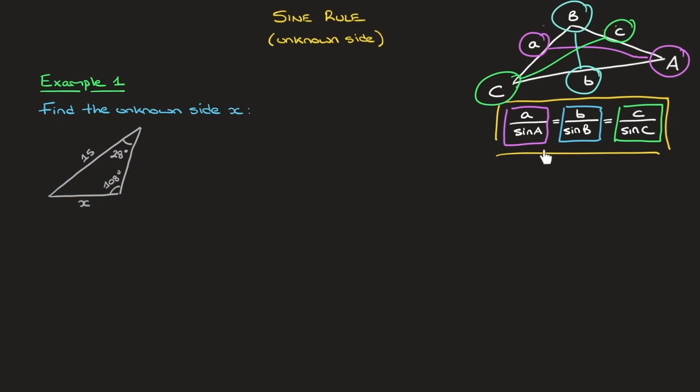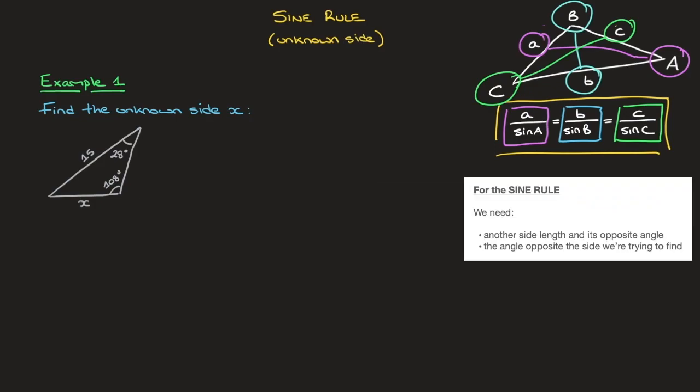With that in mind, and focusing on the first two pairs we have here, we notice that to find an unknown side length, say it's A, all we need is another pair of side length and its opposite angle, as well as the angle opposite the side length we're trying to find.